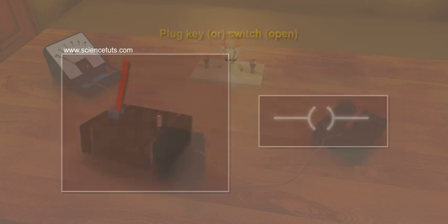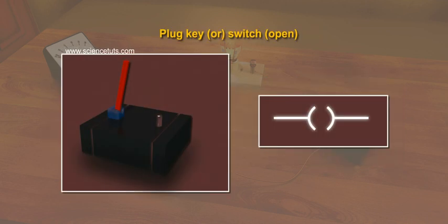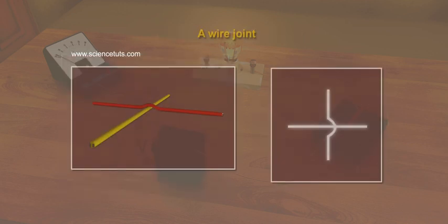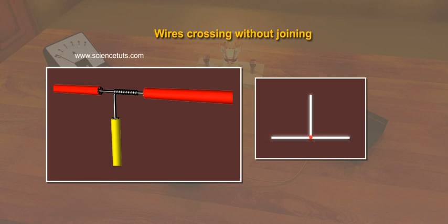Three, plug key or switch open. Four, plug key or switch closed. Five, a wire joint. Six, wires crossing without joining.